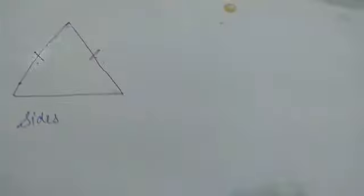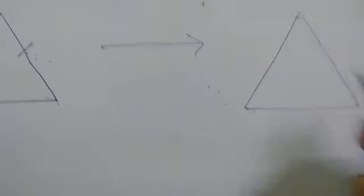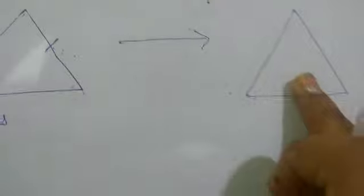The next thing I want to discuss is the triangle symbol. If these two sides are equal, then we can understand that this is an isosceles triangle. If two sides of a triangle are equal, then we can understand — and I am speaking about this specific triangle — that if two sides are equal, then definitely two angles are also equal.